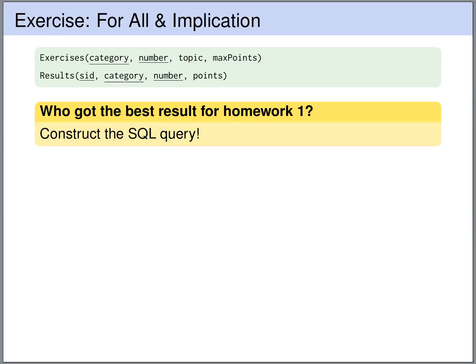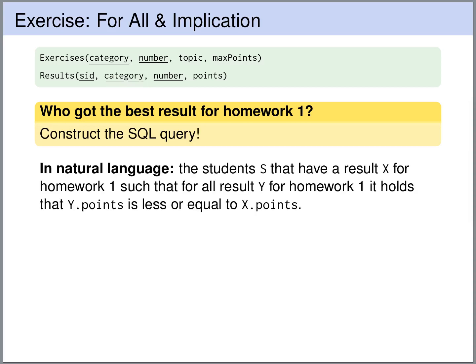Often it's good to start with a formulation in natural language that contains more details. For instance, already the names of the tuple variables that we want to use in the query. So we formulate that we want to find all the students s that have a result x for homework 1, such that for all results y for homework 1 it holds that the number of points of y is less or equal to the number of points of x.